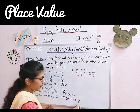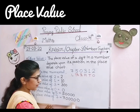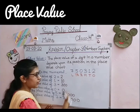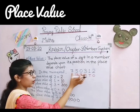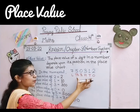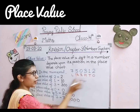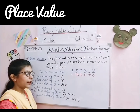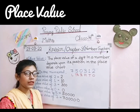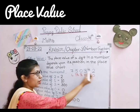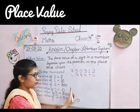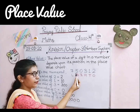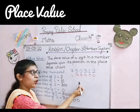तो हम इसे read करेंगे: जितने digits रहे हैं उतने zeros को increase करते हैं। तो इसी तरीके से कोई भी numeral given होगा, आप उसे place value chart में पहले arrange करोगे और उसके बाद पूछे गए digit की place value लिखोगे। अगर पूछा जाए write the place value of each digit, तो आप हर एक digit की place value लिखोगे। अगर पूछा जाए write the place value of 5 in this number, तो आप सिर्फ 5 की place value लिखोगे।